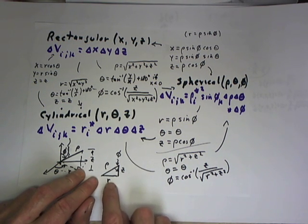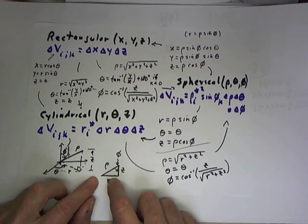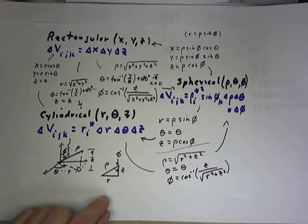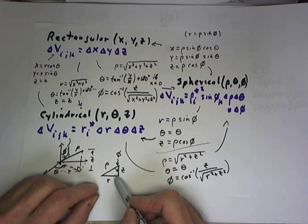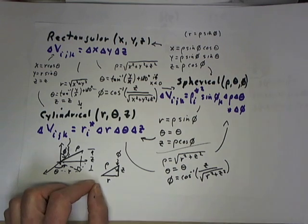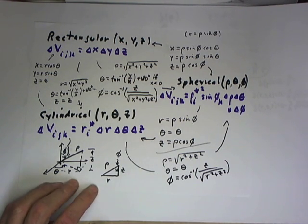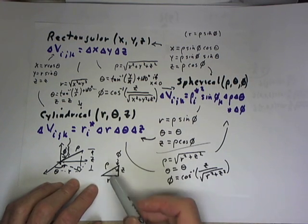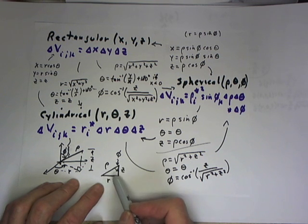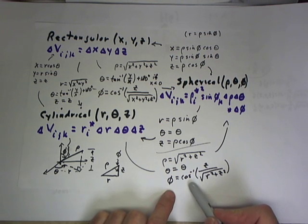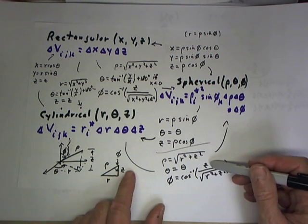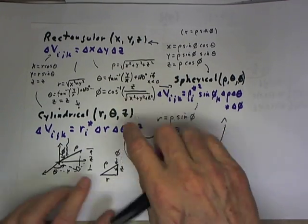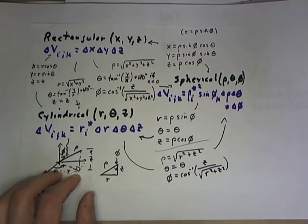From this triangle it is very clear that rho equals the square root of r squared plus z squared. Theta is common between cylindrical and spherical, so theta equals theta. Phi is the angle whose cosine is the adjacent side divided by the hypotenuse, which is z divided by rho. Since rho is the square root of r squared plus z squared, phi is the inverse cosine of z over the square root of r squared plus z squared. So given cylindrical coordinates r, theta, and z, we can write down our spherical coordinates.